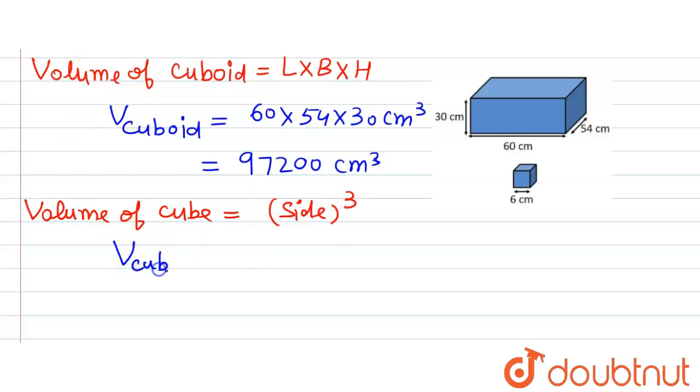So we will write V_cube, that is volume of cube, is equal to—the side of the cube is given as 6 cm—so 6 cube, which will be equal to 216 cm cube.